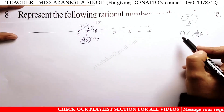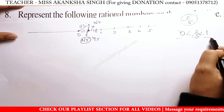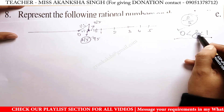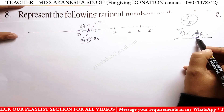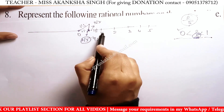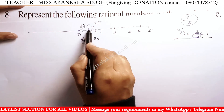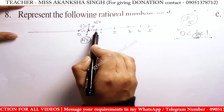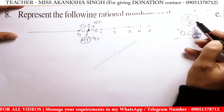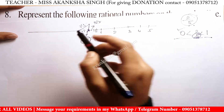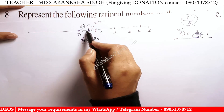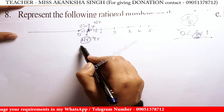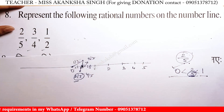So, between 0 and 1, after dividing into 5 equal parts, it becomes 2 by 5. We divide the segment and part two by five — so this will be our actual representation: two by five.